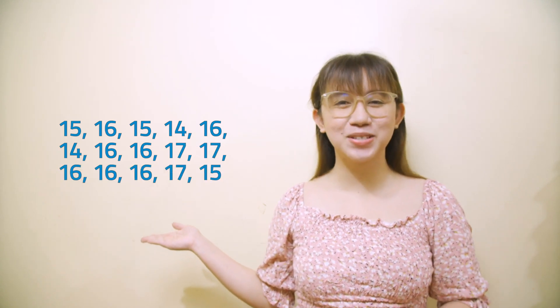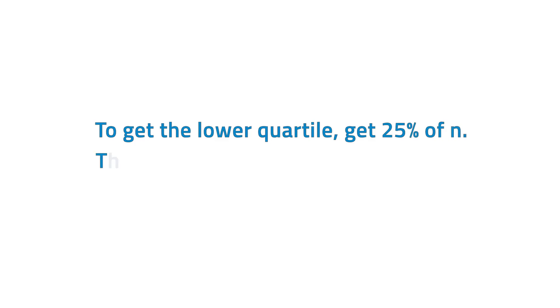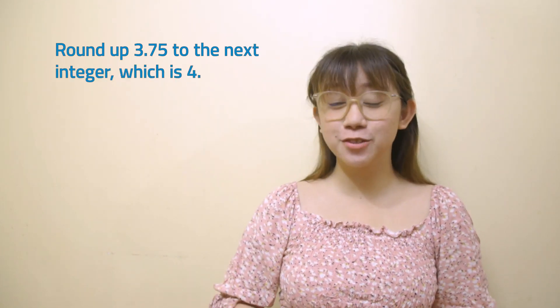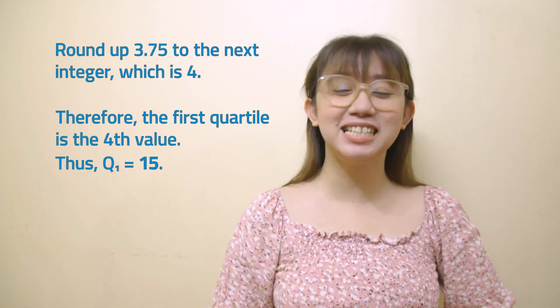Let's try this example. The following are the ages of 15 grade 10 students who will attend the moving-up ceremony. To get the quartiles, it is advised to construct a ranked data set from lowest to highest. To get the lower quartile, get 25% of N. That is, Q1 = (1/4) × N = 0.25 × N = 0.25 × 15 = 3.75. Round up 3.75 to the next integer, which is 4. Therefore, the first quartile is the fourth value. Thus, Q1 = 15.